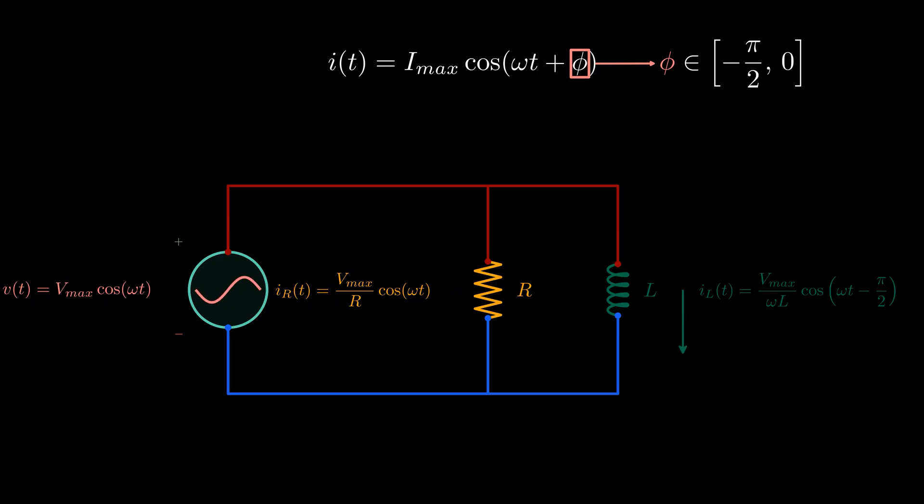We saw that the RMS values can tell us how much energy is transferred on average to the resistor. But we also need this phase shift to know how much magnetizing energy is going back and forth between the inductor and the source. How can we do that without having to keep the whole sine wave?